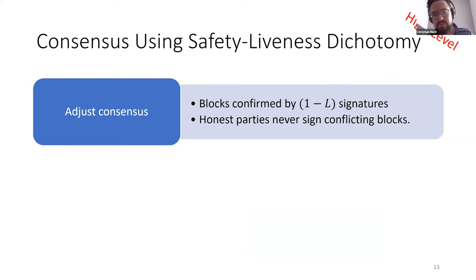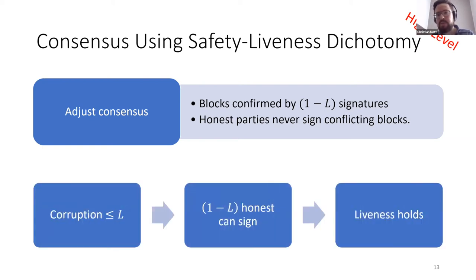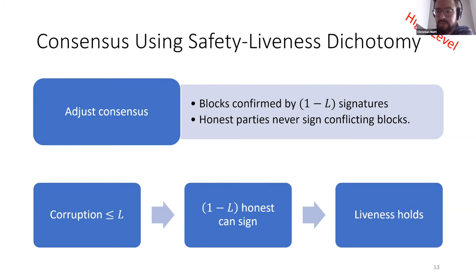At a very high level, I'll show how you can have a consensus algorithm that works with different bounds for S and L. Assume you already have your favorite consensus algorithm that works normally with equal parameters. You can modify it slightly by saying: to confirm a block, require 1 − L signatures, where L is the liveness threshold. And also make sure that honest parties never sign conflicting blocks, which they probably already don't do. This modification is essentially enough to handle these separate parameters. For liveness: if there's less than L corruption, there are at least 1 − L honest parties, which is exactly how many signatures we require — so this doesn't block liveness.